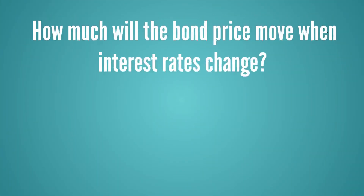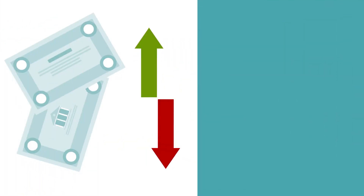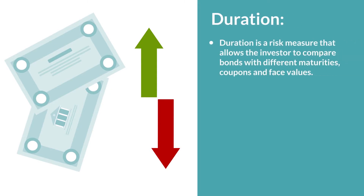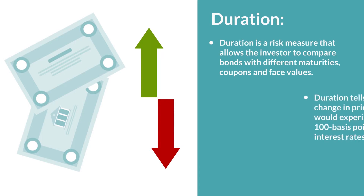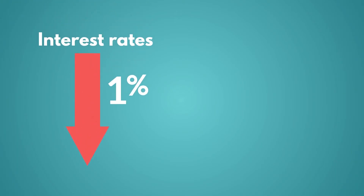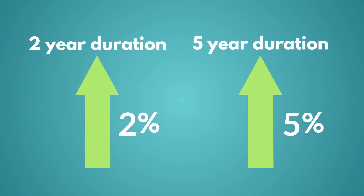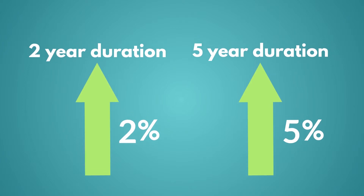So the question becomes: how will the bond price move when interest rates change? This is tough, as some bonds are more sensitive to changes in interest rates than others. To estimate how much a specific bond price will move when interest rates change, the bond market uses a measure known as duration. Duration is a risk measure that allows the investor to compare bonds with different maturities, coupons, and face values. Duration tells the approximate change in price that any given bond would experience in the event of a 100 basis point, or 1%, change in interest rates. For example, suppose interest rates fall by 1%, causing yields on every bond in the market to fall by the same amount. Then the price of the bond with a duration of 2 years will rise 2%, and the price of a 5-year duration bond would rise 5%. This clearly shows that bonds with longer maturities, and of course longer duration, have a greater price risk.